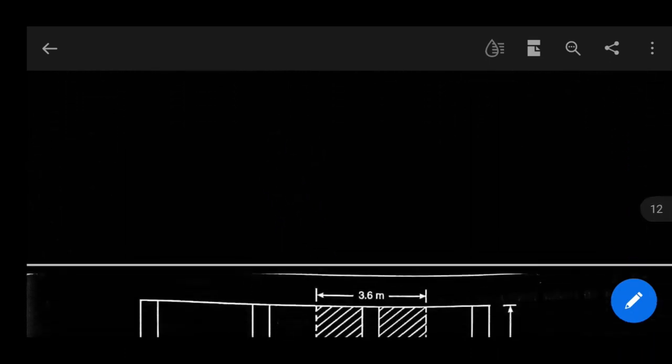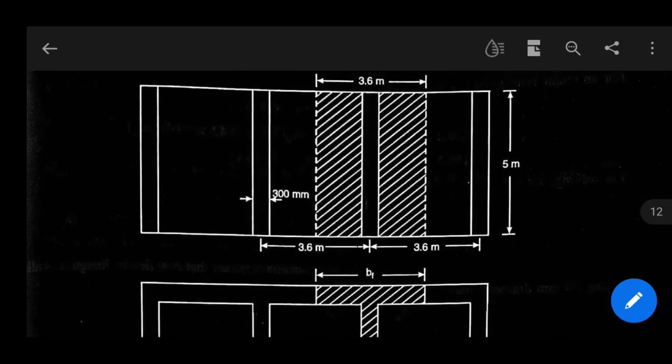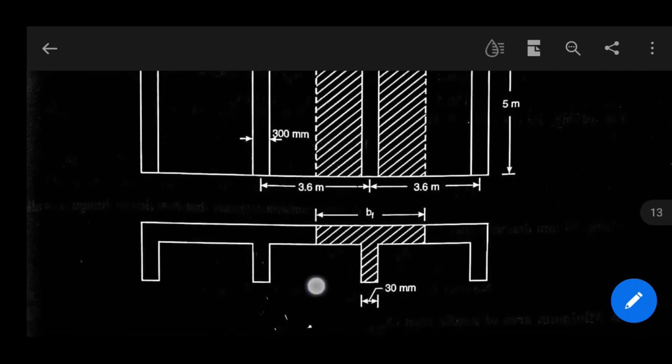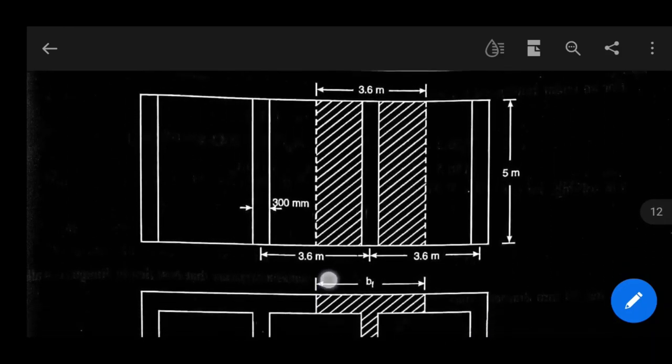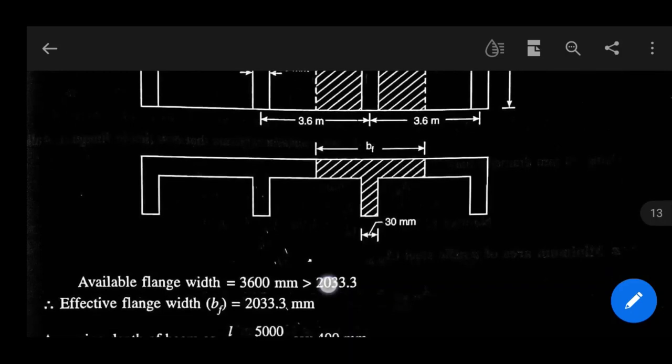So as per question, the diagram will be like this: 300 mm is width of web, center to center distance is 3.6 meter, and 5 meter is length. This is the plan. This is the cross-sectional view of typical T beam which is monolithically constructed with slab.